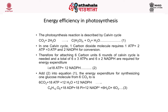The photosynthesis reaction can be summed as: 6 CO2 + 12 H2O → C6H12O6 (glucose) + 6 O2 + 6 H2O. Therefore, for the production of one molecule of glucose, 18 ATP plus 12 NADPH are required.